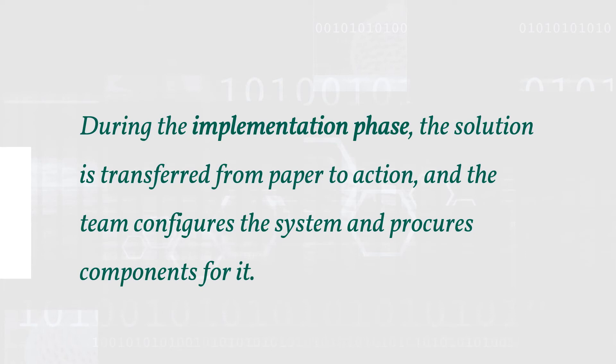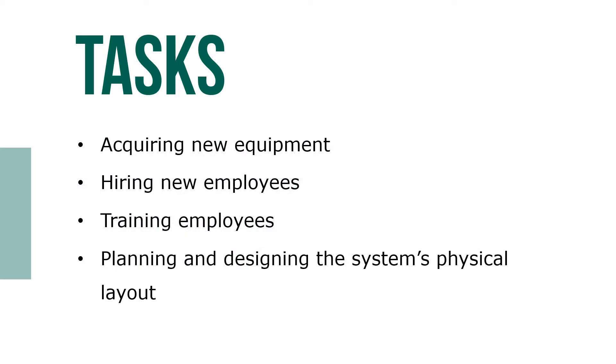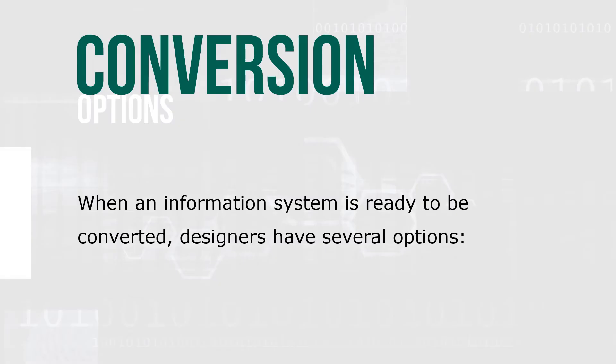During the implementation phase, the solution is transferred from paper to action and the team configures the system and procures components for it. Tasks include acquiring new equipment, hiring new employees, training them, and planning and designing the system's physical layout. When an information system is ready to be converted, designers have several options.